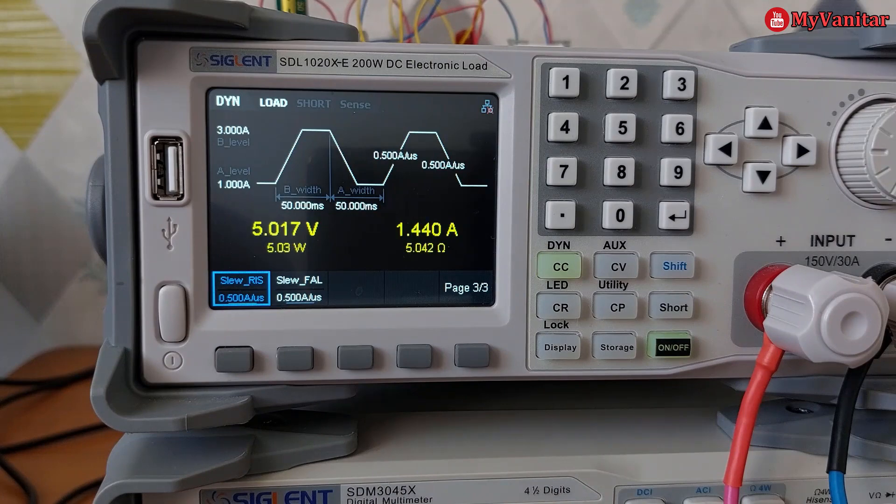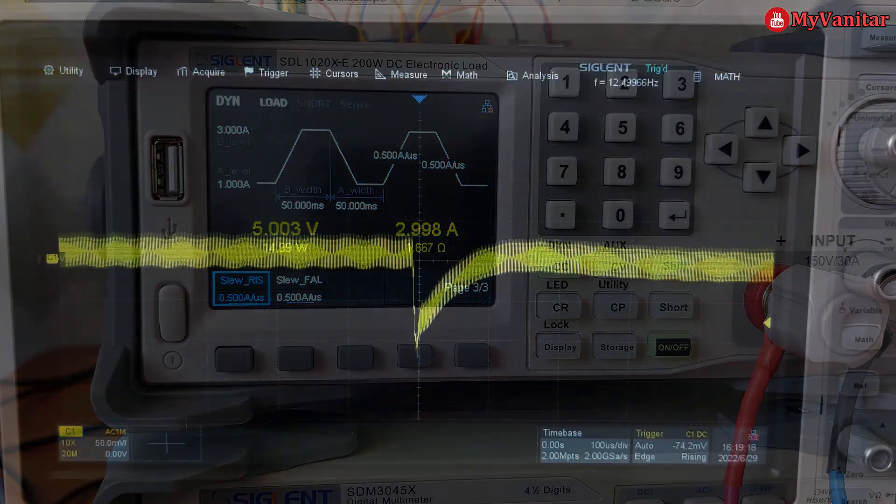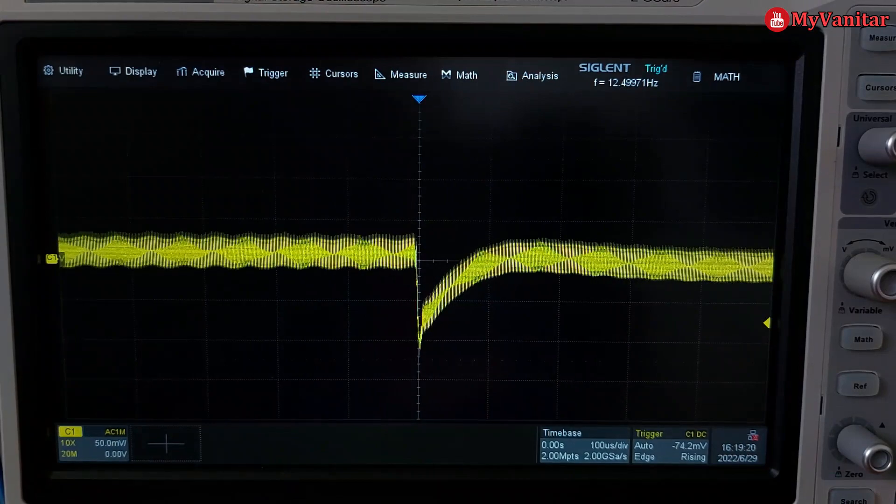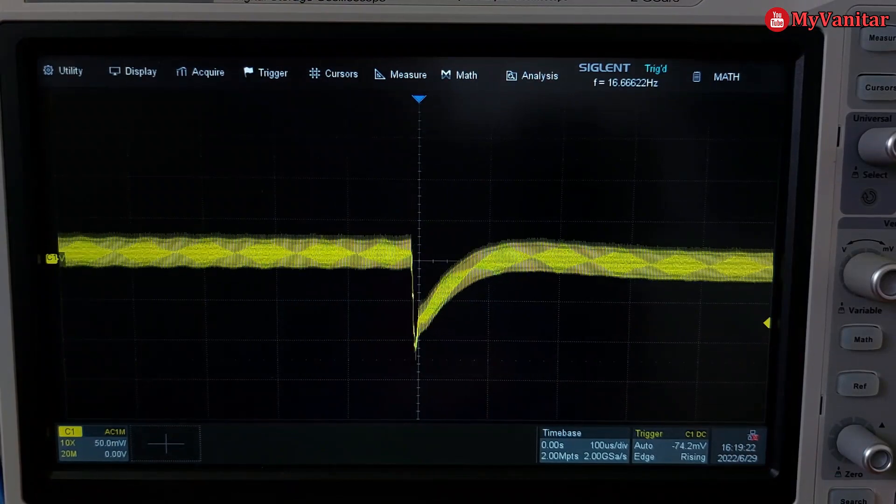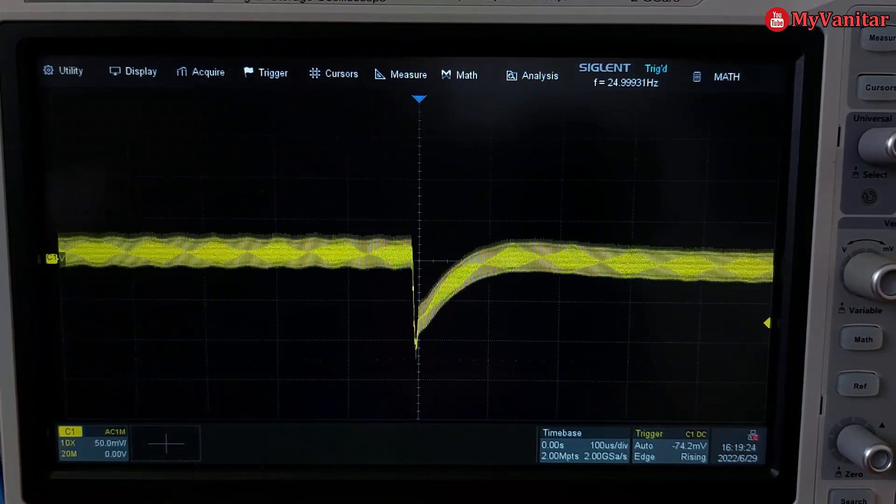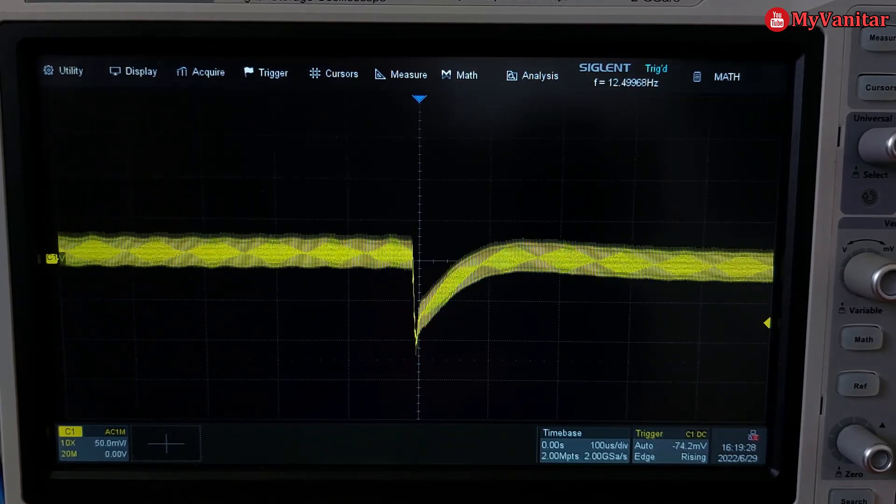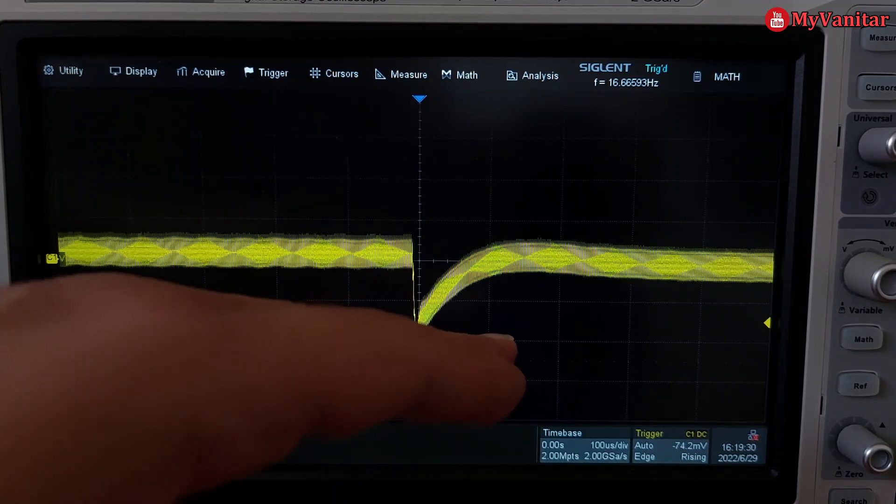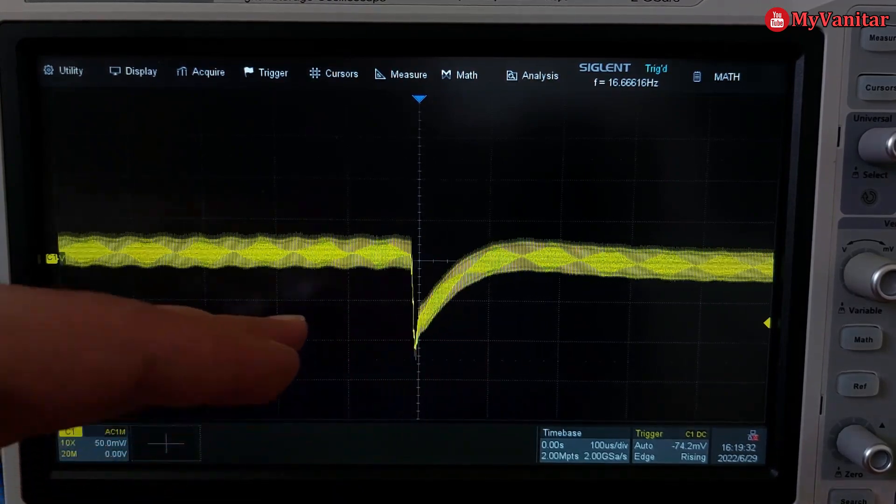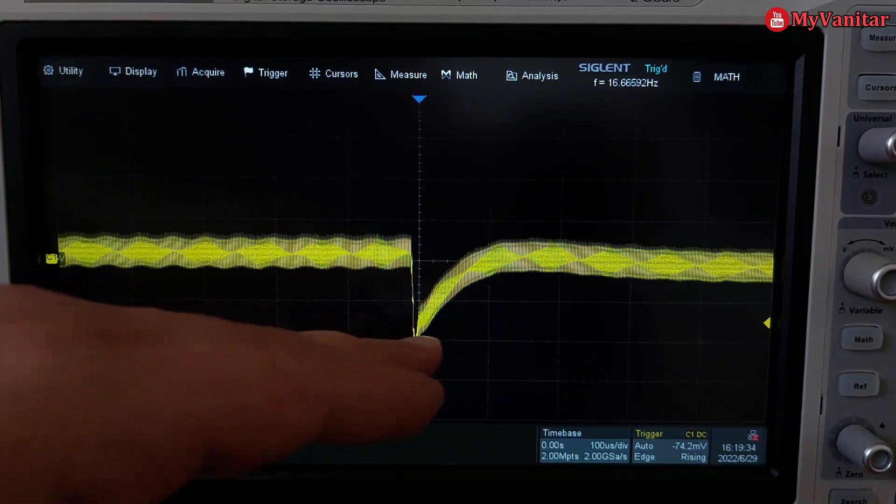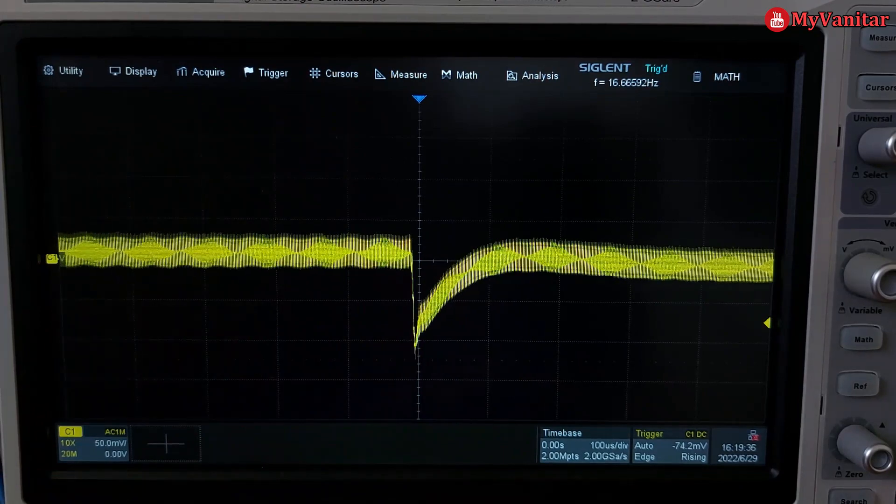This is the oscilloscope screen. I have already captured one of the events with the probe at the output of the buck converter. As you see, we don't see any ringing at the output. This is just switching noise, it doesn't matter.